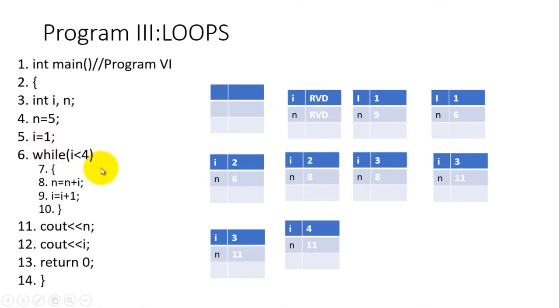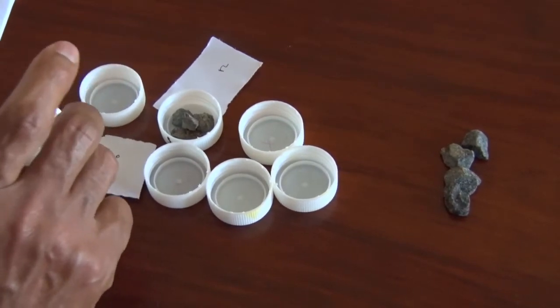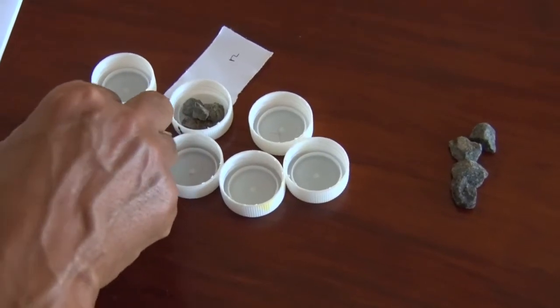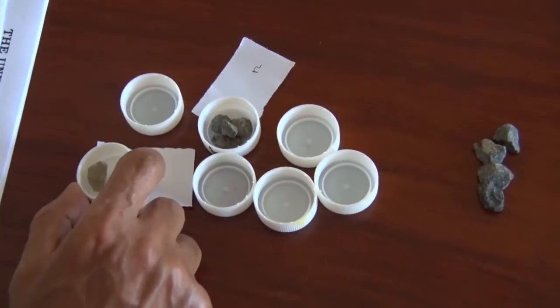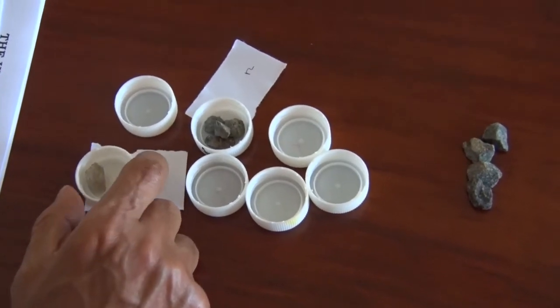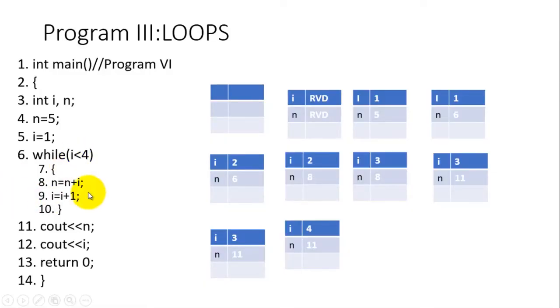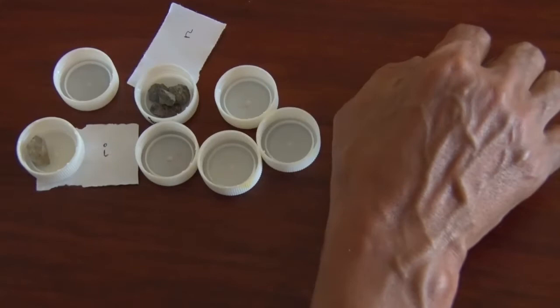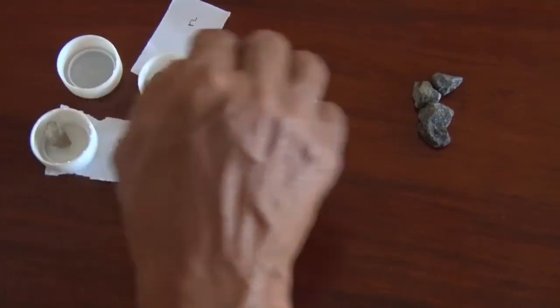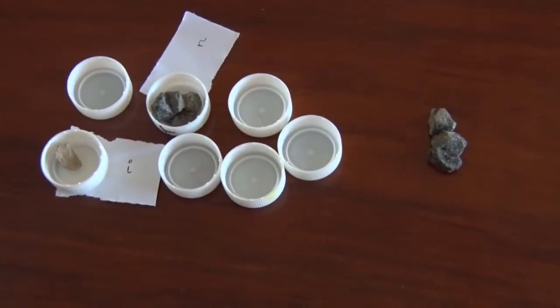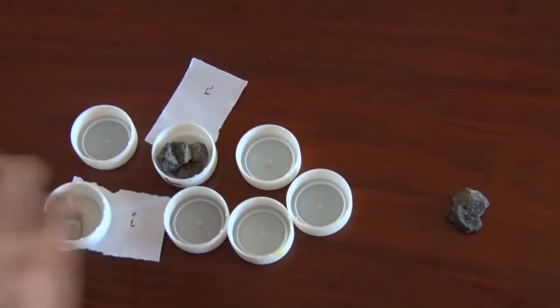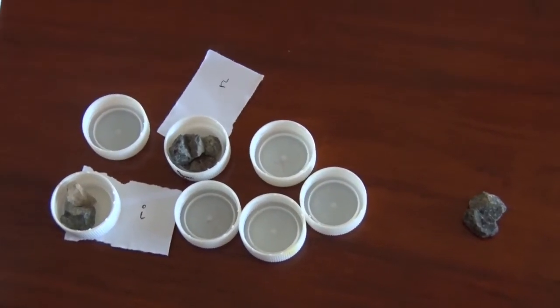When the machine comes to line number 6, while i less than 4, it checks room i and finds that i contains only 1. One is less than 4, so it goes to line number 8 where n equals n plus i. One is added here. Then line number 9, i equals i plus 1, so the 1 in i is incremented.